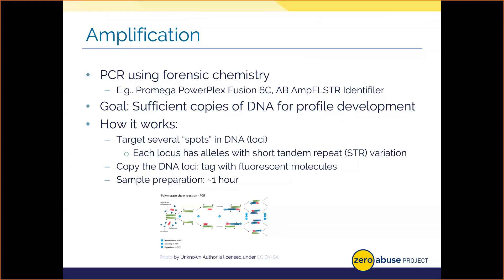The entire PCR process of thermal cycling — heating and cooling to make new DNA copies — takes about an hour, and prepping the samples takes on average one to two hours. The good news is that you can do dozens of these samples at once and batch multiple cases.